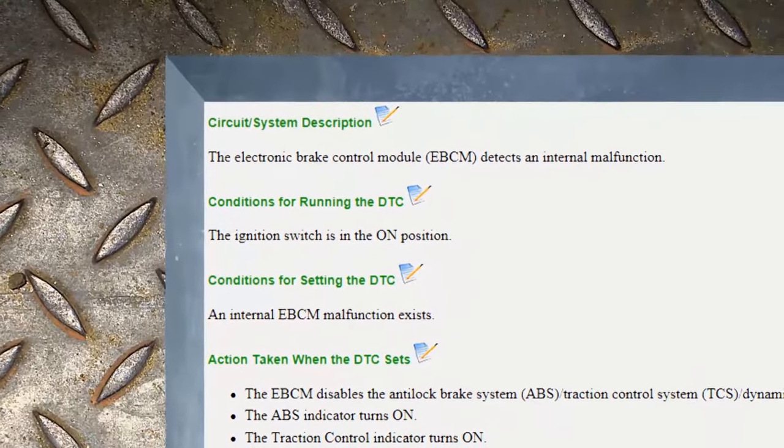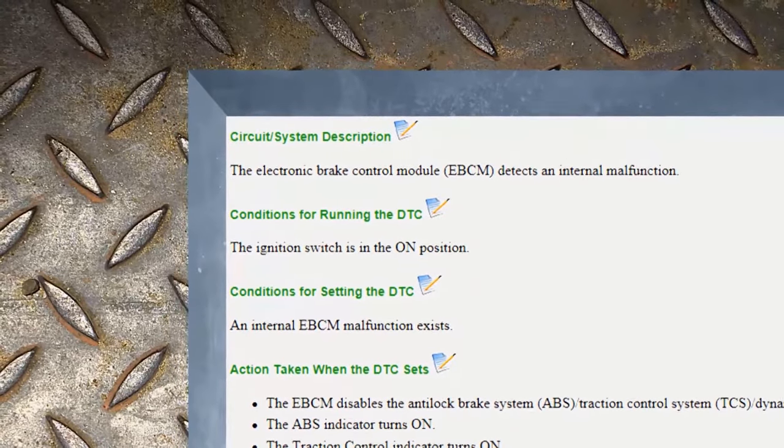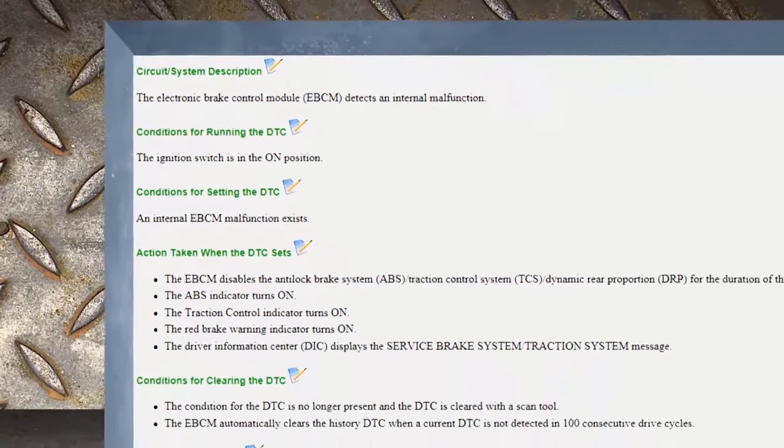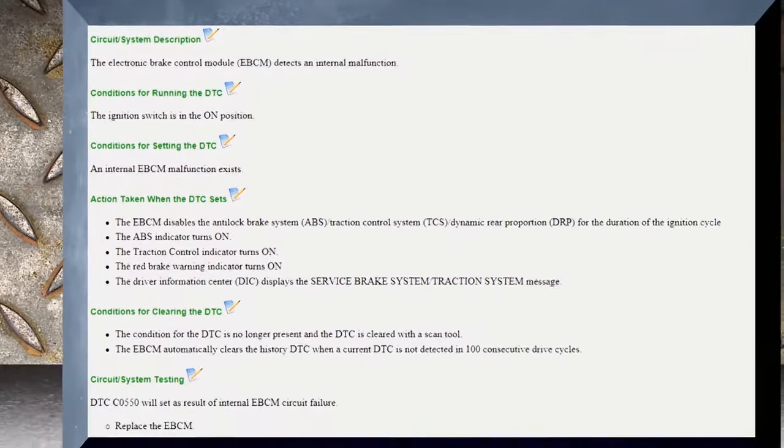It's pretty simple. It's electronic brake control module detects a malfunction. Flow chart says replace it. We're done. The brain can't think, it can't function. Now, before we go into replacing it, let's look at a couple of ABS components.